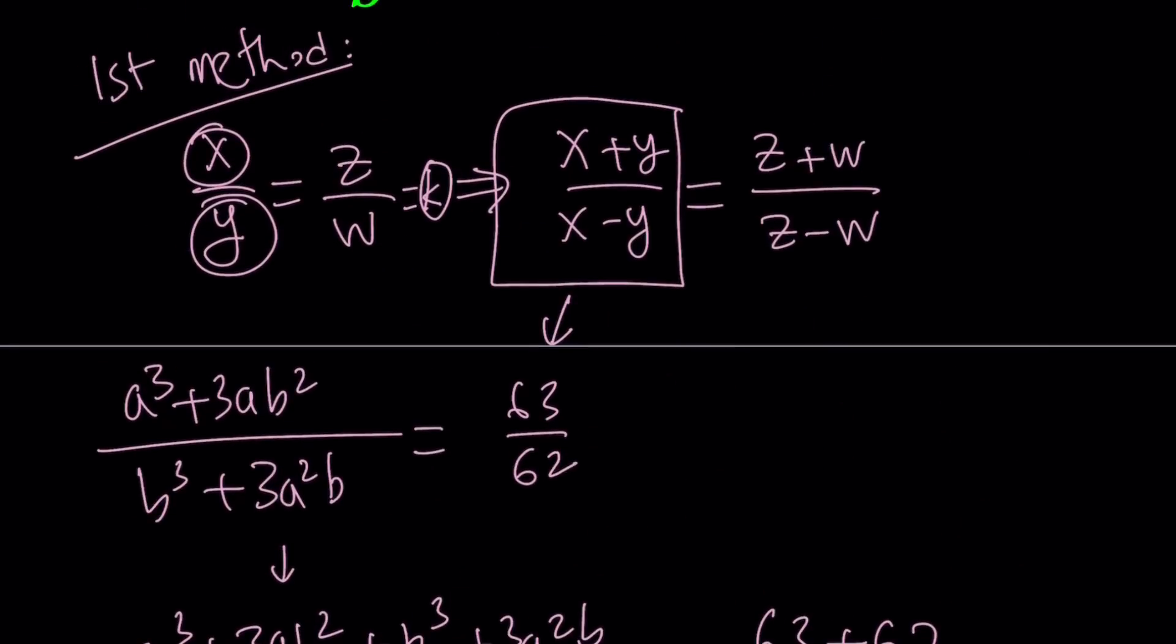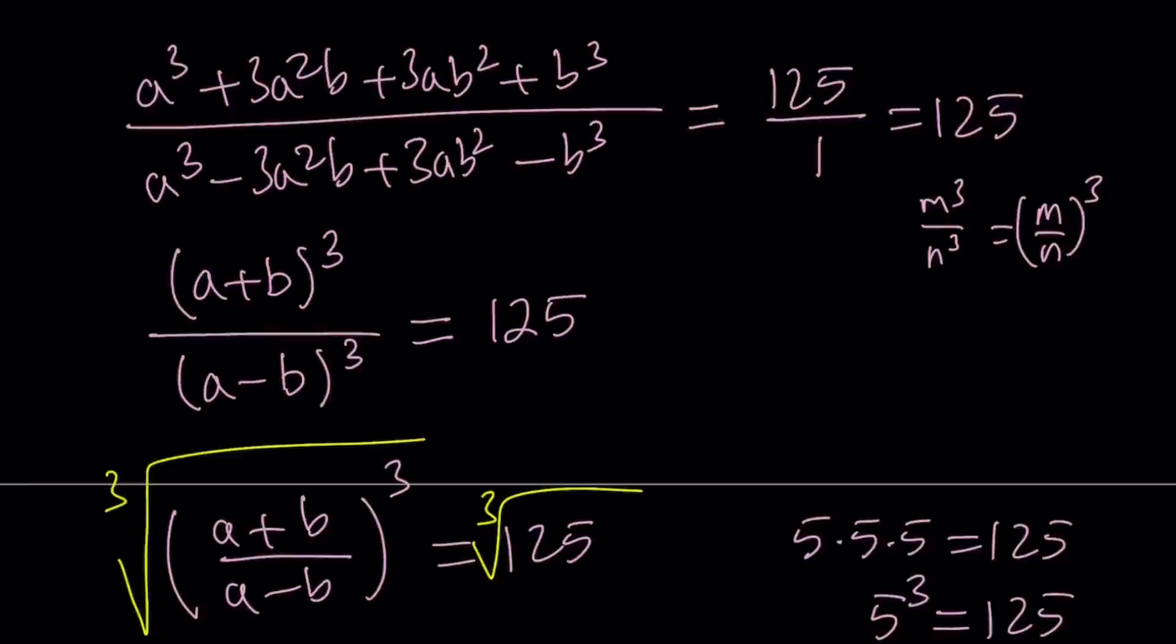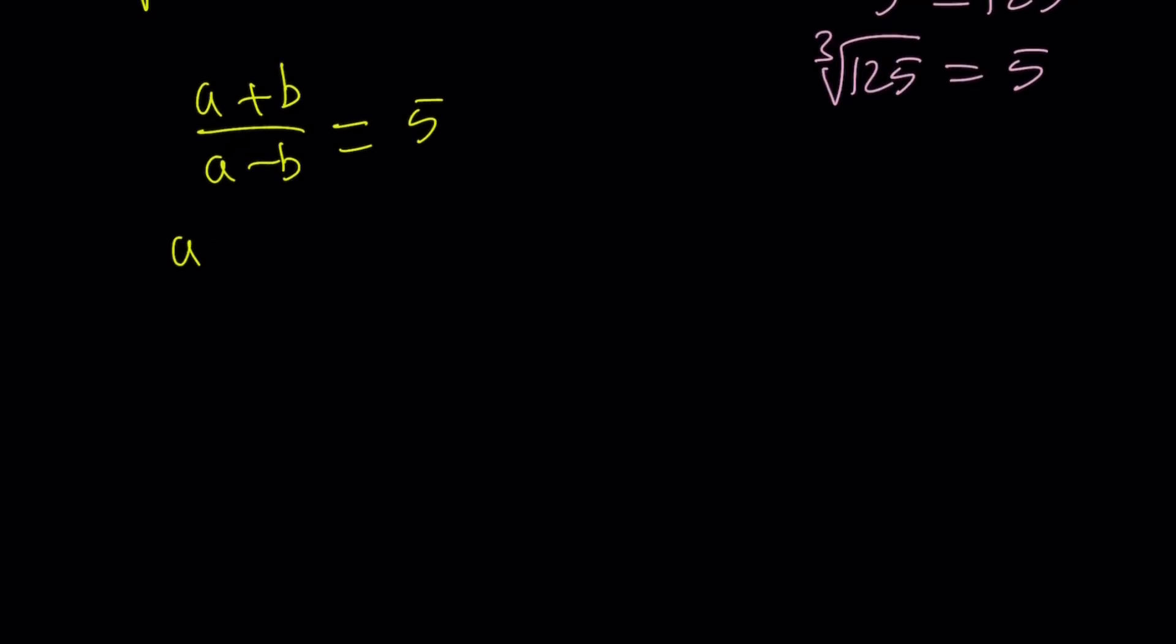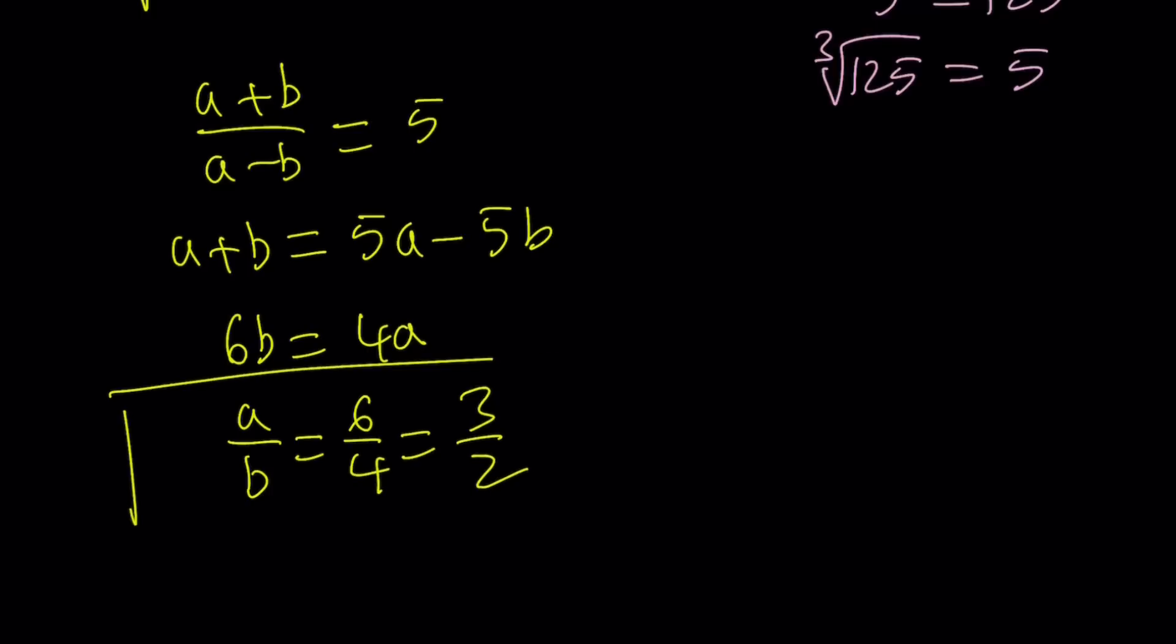Now, remember, our goal was to find or solve for a over b. And we can easily do that from here. If you go ahead and cross multiply, a plus b becomes 5a minus 5b. Let's go ahead and bring the a over here to the right hand side. That gives us 4a, or I can just keep the b's and a's in wherever they are. So go ahead and add 5b. You're going to get 6b. Subtract a. You're going to get 4a. And now we can go ahead and find a over b from here. Divide by b and then divide by 4. You're going to get a over b equals 6 over 4, which can be written as 3 halves.